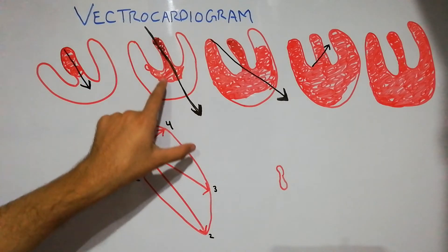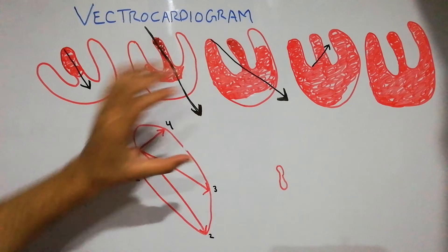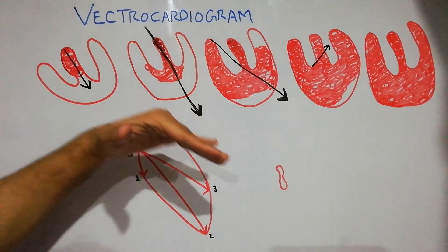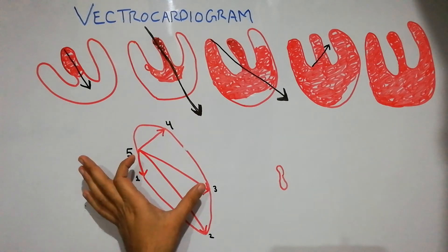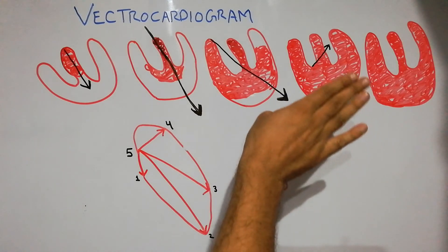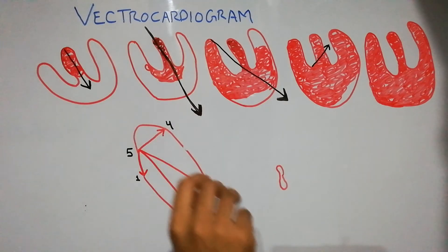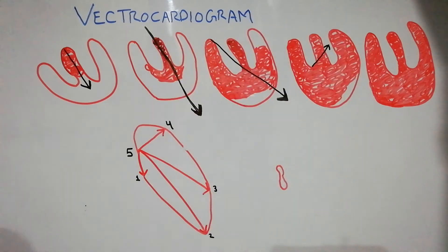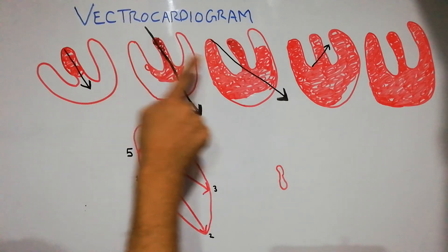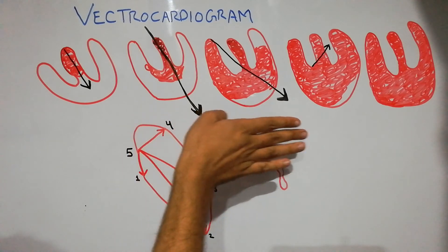As ventricular depolarization increases, the vector for depolarization also increases. As depolarization involves the endocardium, the direction of the vector slowly shifts toward the left side. Finally, when depolarization is in the end stage and has shifted toward the base, the direction of the vector also shifts toward the base. As the speed and amount of depolarization decreases, the voltage of the vector also decreases, showing changes in both size and direction.